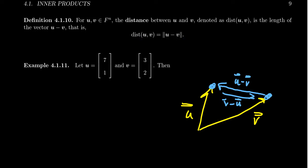So if we wanted to compute the distance between vectors in R2, let's say u, which will be 7 and 1, and v, which is 3 and 2, the distance between these two vectors would be the length of u minus v.